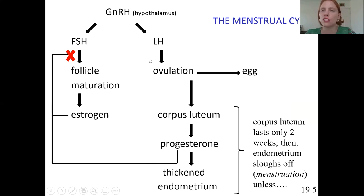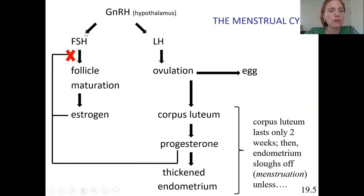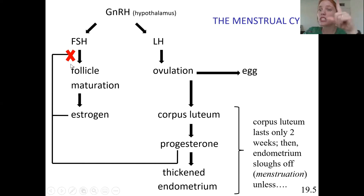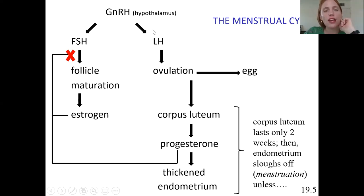Let's tie this back into the ovarian cycle. The hypothalamus releases gonadotropin releasing hormone and two gonadotropins: FSH and LH. FSH matures the follicles, making more follicular cells which produce estrogen. Estrogen then negatively inhibits FSH and GnRH to maintain lower estrogen levels. The drop in FSH helps select one single dominant follicle, then there's a role reversal and we get the LH surge, which triggers ovulation.